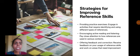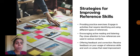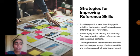Which are the strategies for improving reference skills? Engage in activities which require identifying and using different types of references. Encourage active reading and listening, paying close attention to how references are used in different contexts. Offer feedback and correction, receiving feedback on how to use reference skills and work on areas that need improvement.